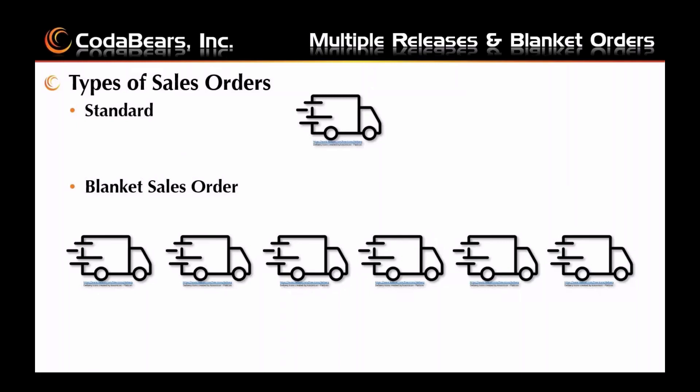A blanket order is a purchase order from a customer asking the supplier to provide shipments of the same parts over a period of time. Most often blanket orders are used when a customer buys large quantities and has negotiated discounts. It is suggested to finalize blanket POs periodically, possibly at least once a year, to enhance performance in order entry, as building up lines and releases can make Epicor slower if kept open indefinitely.